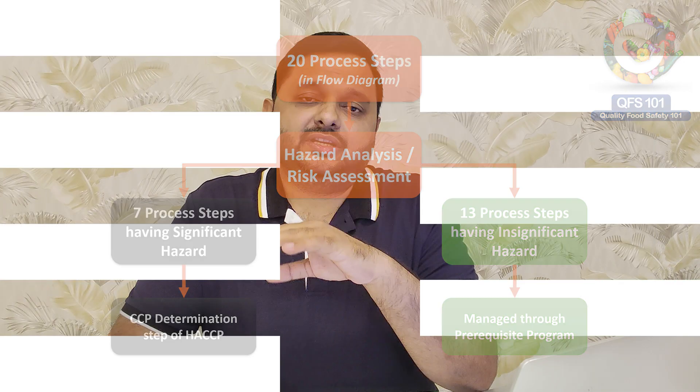Within the CCP decision tree, which we discussed in the last video — I will leave a link up here and also in the description — we decide whether those significant hazards are actually critical control points or not. Some of the steps qualify and become actual critical control points, and the rest are not critical control points. We call them control points or CPs. In HACCP, those are also controlled through our prerequisite program.